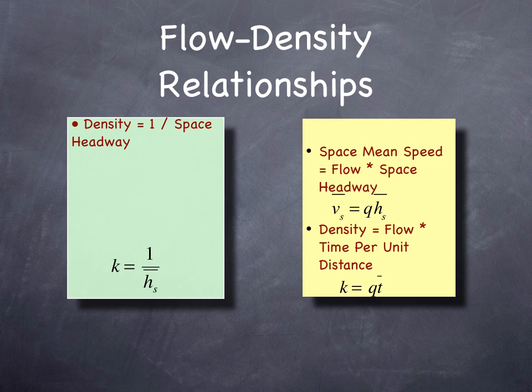The space headway is also important. 1 over the average space headway is the density, or density times the space headway equals 1. Density is the vehicles per unit length. The space headway is the distance between each vehicle. These relationships, again, are all basically reworkings of what we've just seen. They're just different ways of presenting the same information. Space mean speed equals flow times the space headway. The density equals the flow times the time per unit distance.